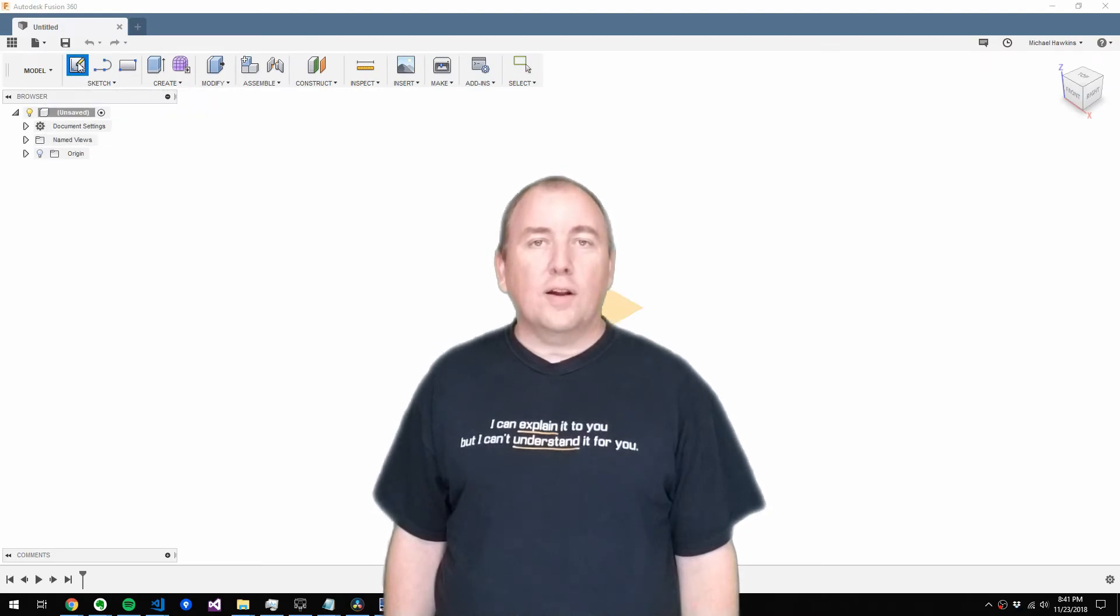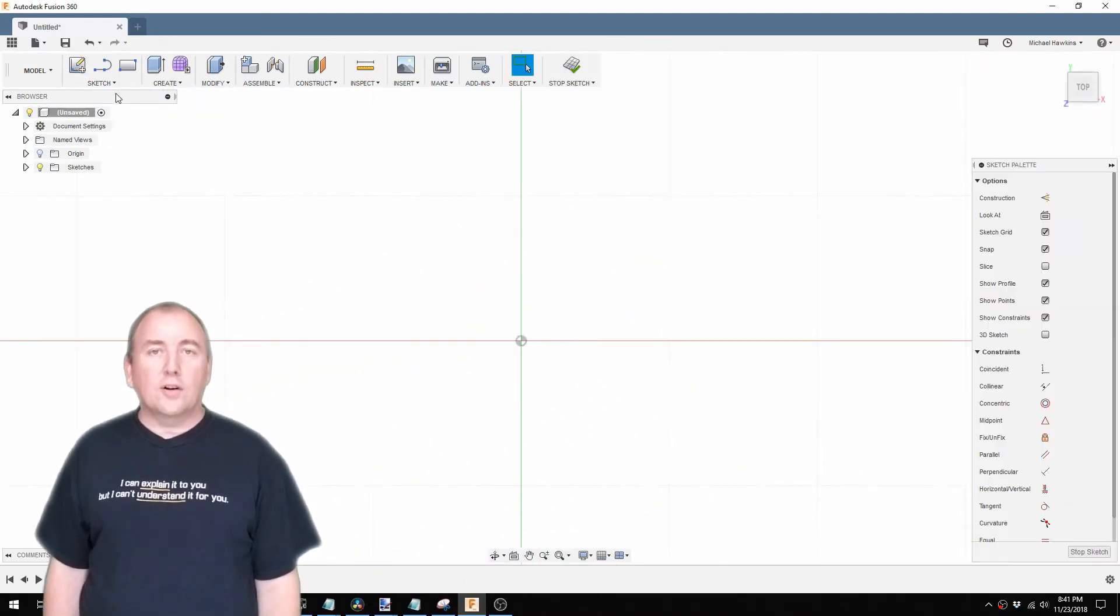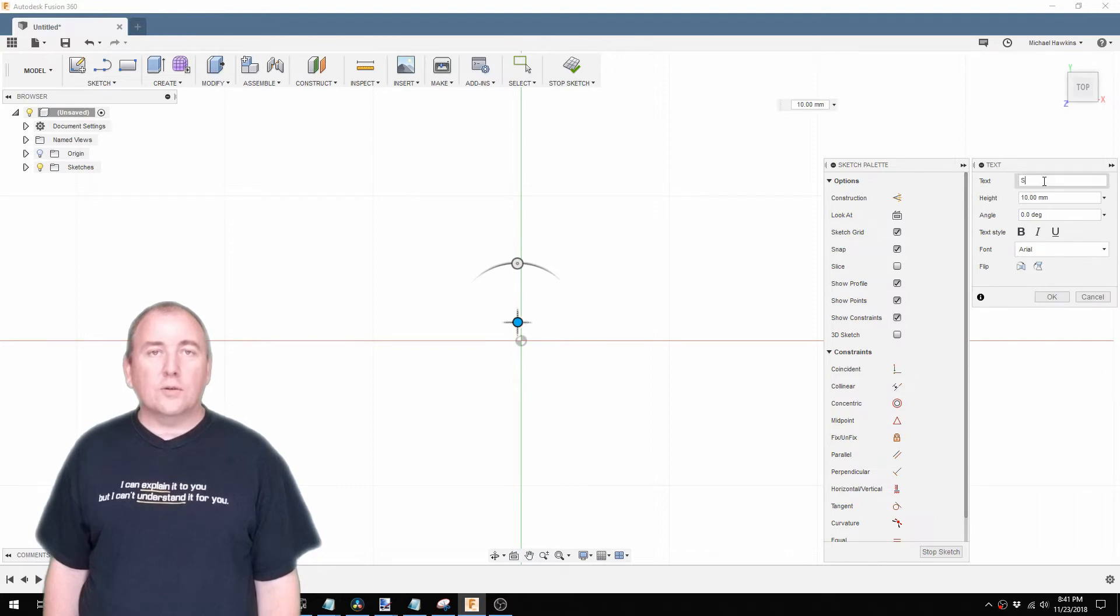In Fusion I started by creating a model for each letter we needed. I started each model by creating a sketch and using the text tool to add the letter. As the saying goes, measure twice and cut once.